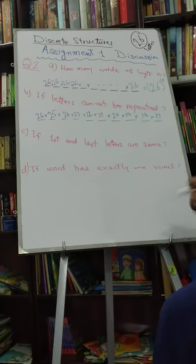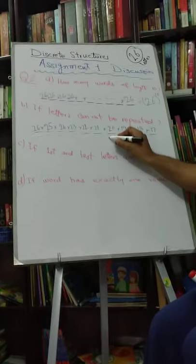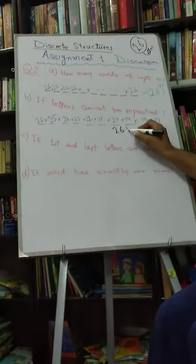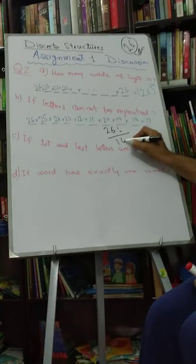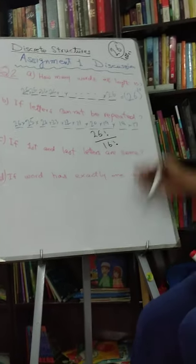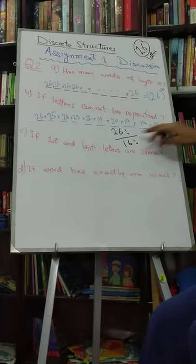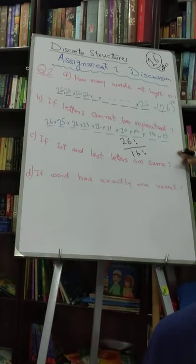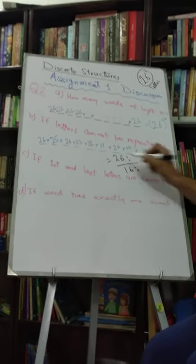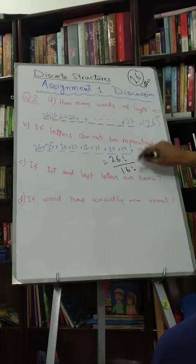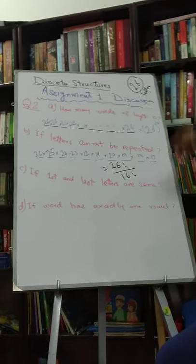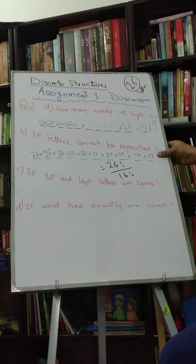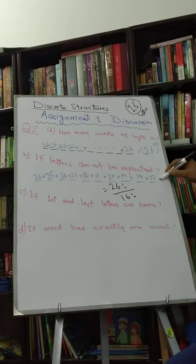We have an alternate notation for writing this using factorials. It's 26 factorial divided by 16 factorial. How it comes — you can see: just expand 26 factorial and 16 factorial, you will get the same thing, so these things are equal. If you don't understand it, it's okay, we will explain again. But this answer should be clear.